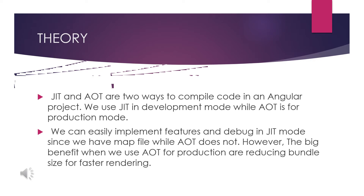JIT is for development mode — whenever we need to debug something, find issues, or make upgrades, we use development mode. AOT is for production mode. Once in production mode, everything will be uploaded as a bundle, so there will be no last-minute changes and we need to be careful on each AOT compilation. That is the main difference between the two.